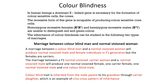Color blindness was discovered by Wilson in 1911. A person suffering from color blindness is unable to distinguish red and green color. Red blindness is called protanopia and green blindness is called deuteranopia. In humans, the dominant X-linked gene is necessary for the formation of color-sensitive cells (cones). The recessive form of the gene is incapable of producing color-sensitive cones. Homozygous recessive females and hemizygous recessive males are unable to distinguish red and green color.